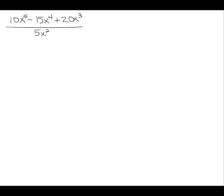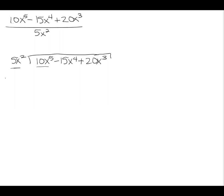Let's look at this problem using a second method: long division. I'll rewrite it as a long division problem with 5x² dividing into 10x⁵ - 15x⁴ + 20x³. Just like long division, I take what's on the outside and divide it into each term. So 10x⁵ divided by 5x²: 5 goes into 10 twice, and x⁵ divided by x² is x^(5-2), giving me 2x³.